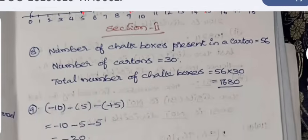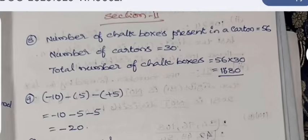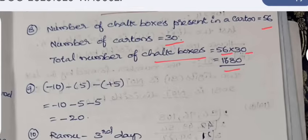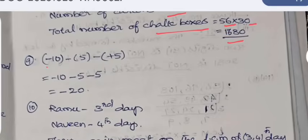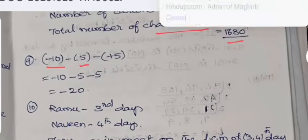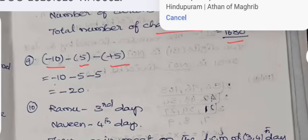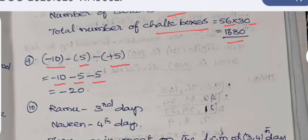For Section 2, number of chalk boxes present in a carton is equal to 56, number of cartons is equal to 30. Then total number of chalk boxes present is equal to 56 into 30, which is 1680. Next, we have to do these calculations: -10 - 5 - (+5). For this, -10 - 5, minus into plus becomes minus. All are negative, adding and putting negative sign gives -20.